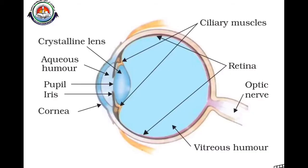Good morning, dear students. Welcome back to physics class. Today we are going to discuss a new topic: the human eye. We will discuss the structure of the human eye, its main parts and functions, and then the defects of the human eye and how to correct them.